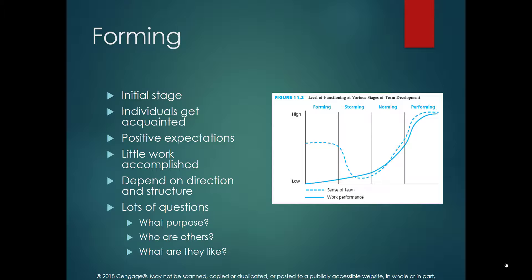Forming is the first or initial stage of team development, involving the transition from individuals to team members. We involve individuals whose expertise is needed for the project, and team members need to have a positive expectation at this stage. The main activity is thinking and planning the work, so the amount of actual work is very little. The project manager needs to provide direction and guidelines on how to accomplish the objectives, as people may have different understandings about the outcome.